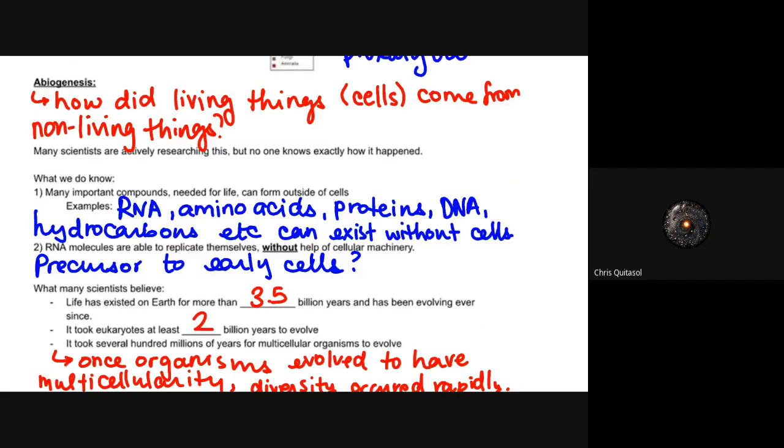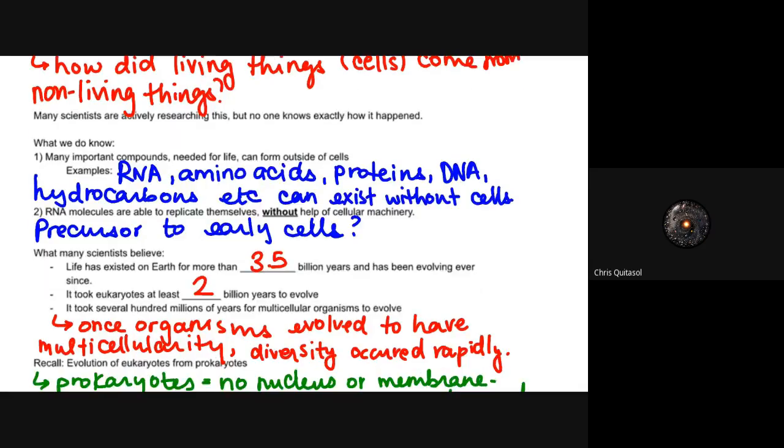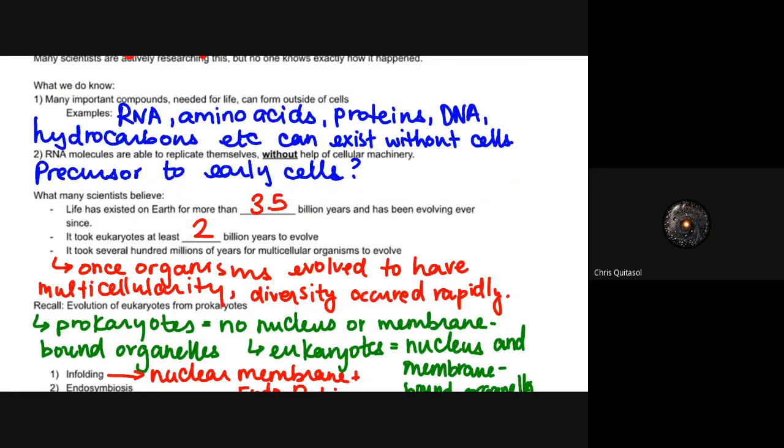The number two thing that we know is that RNA molecules are able to replicate themselves without the help of cellular machinery, and a lot of scientists believe that these were the precursors to early cells. This allowed genetic material to replicate itself without being inside of a cell. The cell kind of arose as a result of being able to provide protection for that genetic material, and then it snowballed afterwards.